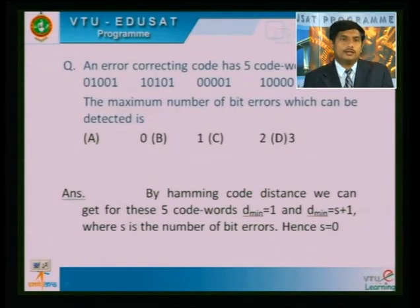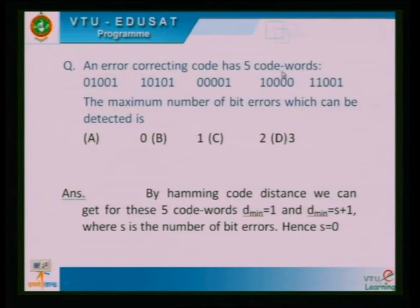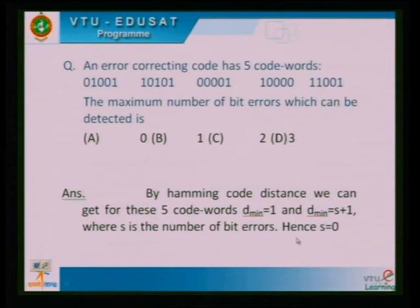The coding and error-correcting code has five code words. The maximum number of one-bit errors which can be detected is 0, and this is the reason.